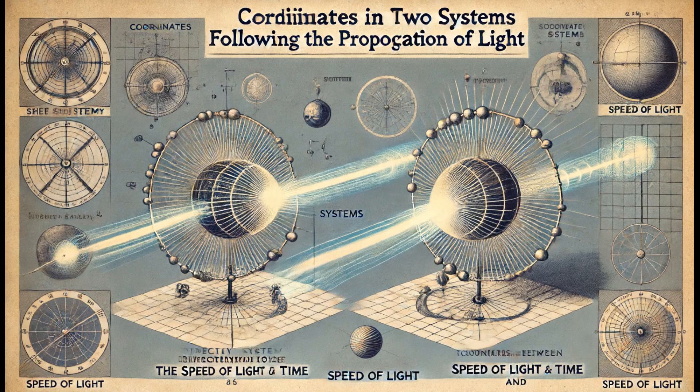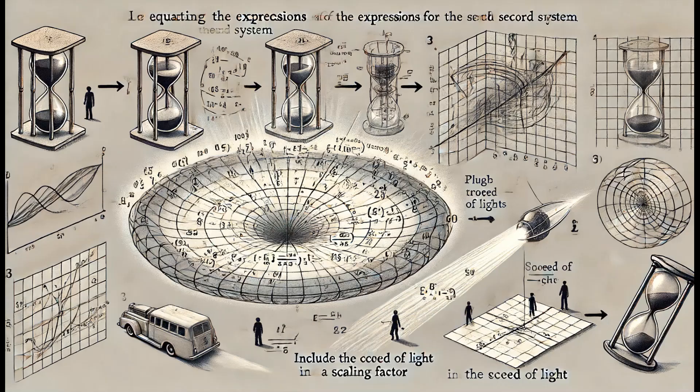The coordinates in the first system are directly proportional to the speed of light and time, as given by an equation. Similarly, the coordinates in the second system follow the same relationship.